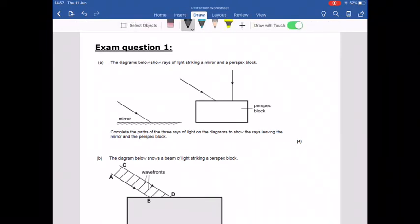Again, you'd have to use a ruler for it. You can see here, one's about reflection because it's got that reflective mirror surface. The other question is about refraction because it's a perspex block and not a reflective surface.